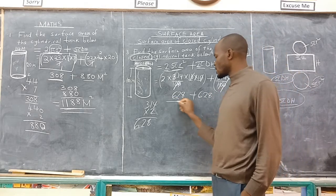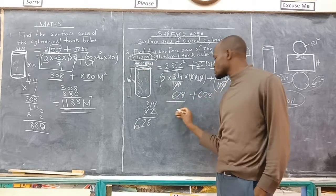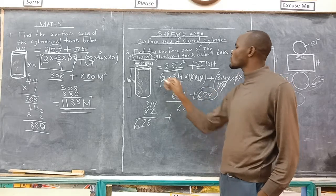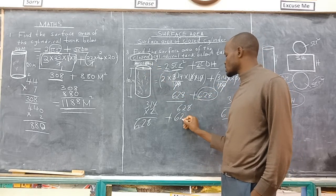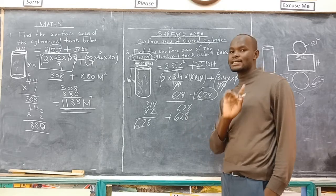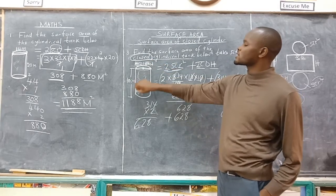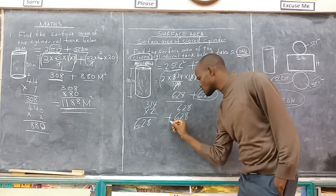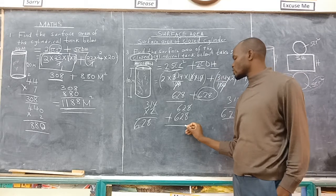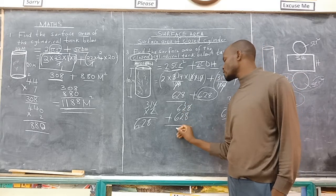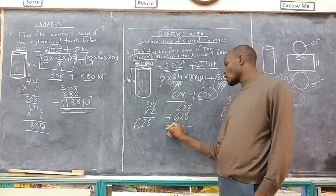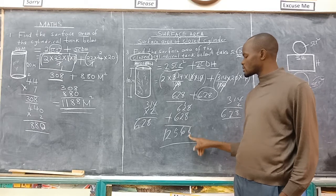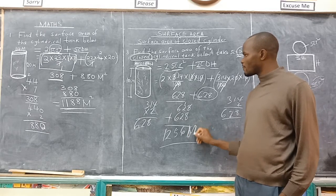So what is the total surface area? The area of the two circles is 628, plus the area of the curved surface which is also 628. Note that it does not always mean the two areas will be equal — this is just for this instance. 8 plus 8 gives 16, carry 1; 1 plus 2 plus 2 gives 5; 6 plus 6 gives 12. So the total surface area is 1256 centimetres squared.